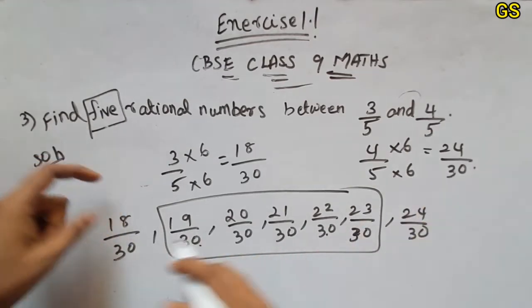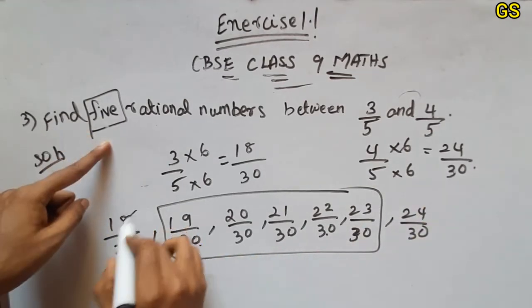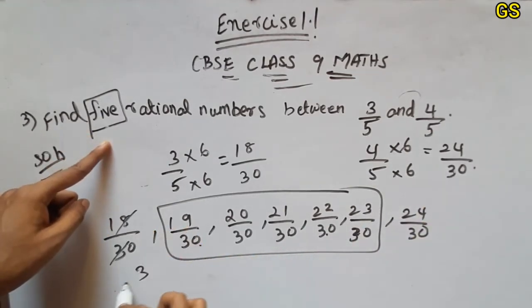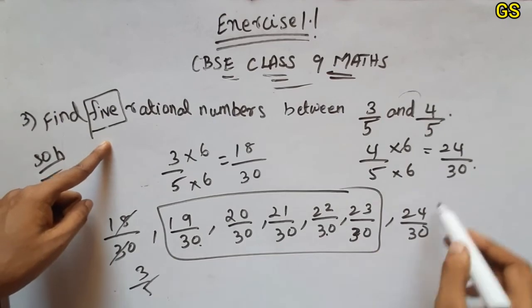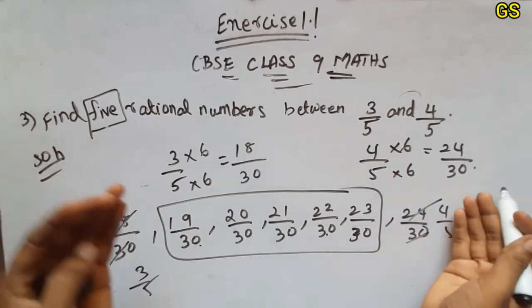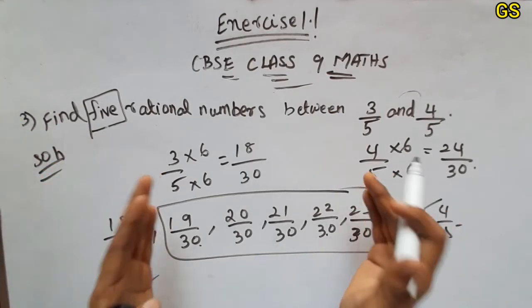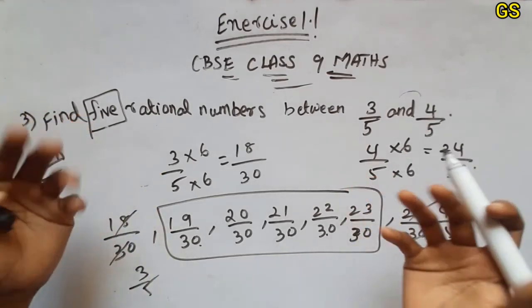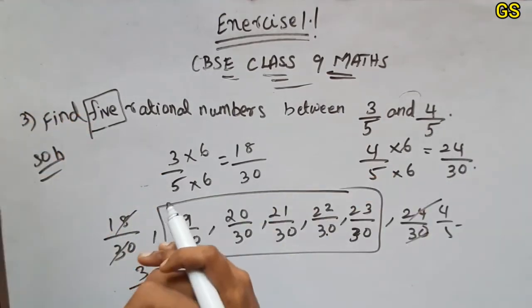So, if you want the answer between 3 by 5 and 4 by 5 with 5 numbers, it will be easier this way. Thank you.